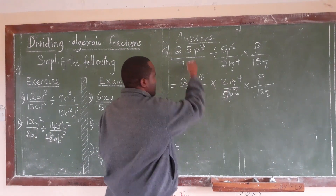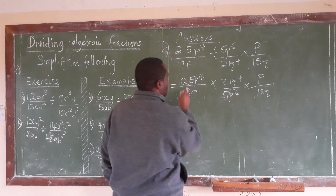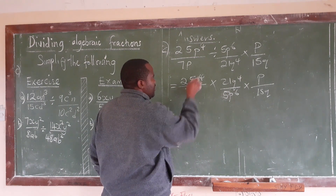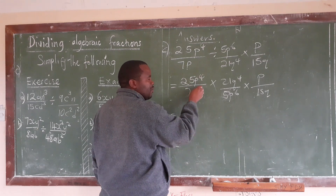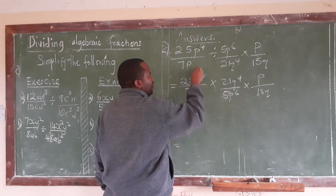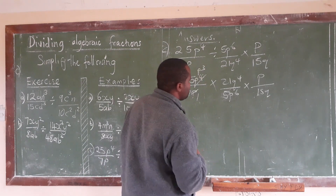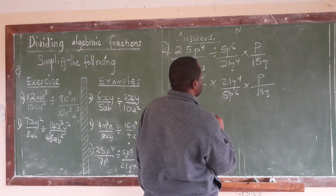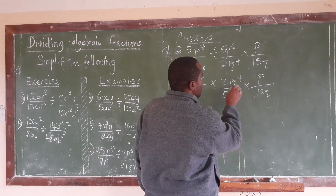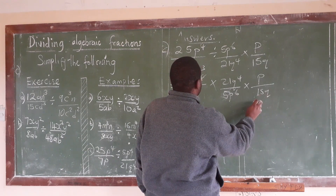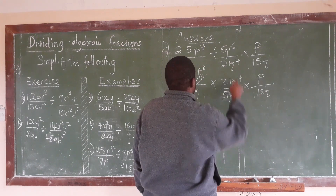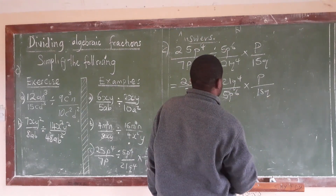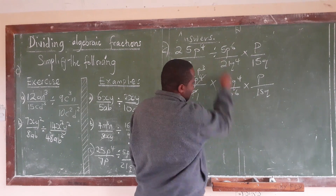We can counter-check if there is something we can do. You can find that 7 does not have a common factor with the other terms. Then P and P to the power 4 — P is the common factor — so P into P is 1, and P here will become P to the power 3. Then we can come and check, and we are able to simplify further.